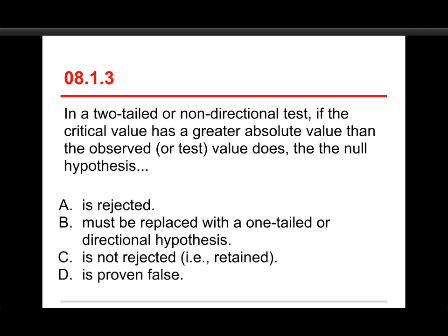The third question. In a two-tailed or non-directional test, if the critical value has a greater absolute value than the observed or test value does, then the null hypothesis is not rejected, that is retained, or is proven false.